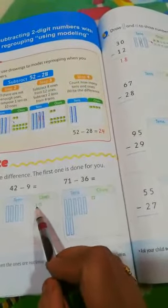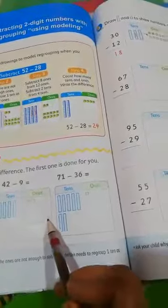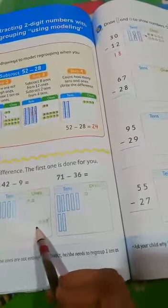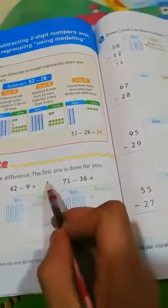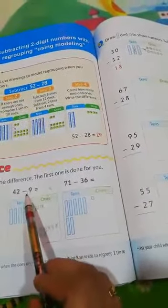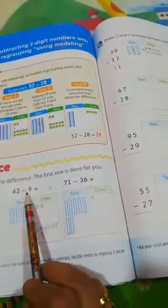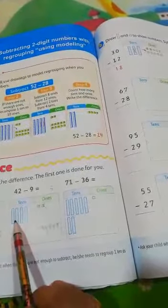How many ones remain? 1, 2, 3. How many tens here? Nothing. So 3 ones remained.